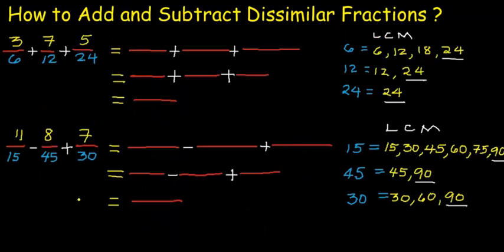Let's have another example on adding and subtracting dissimilar fractions. We have 3 over 6 plus 7 over 12 plus 5 over 24. First, we need to find the lowest common denominator or LCM of 6, 12, and 24. Multiples of 6: 6, 12, 18, 24. For 12: 12 and 24. For 24: 24. The common multiple is 24, so our LCD is 24.